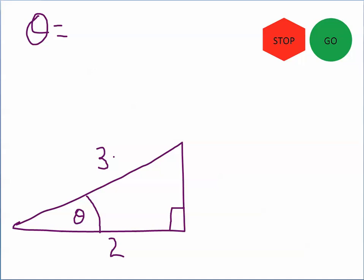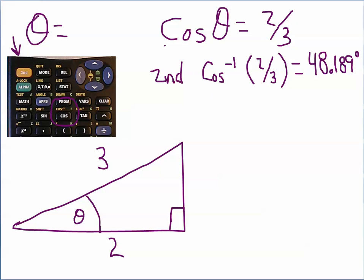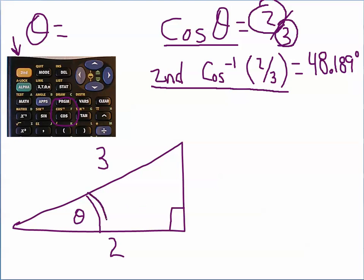All right, let's see if you can work this one — you're looking for theta. Press on the stop sign. All right, let's see how you did. We don't know theta, so we know we're going to be using the inverse function to work this problem backwards. We have the adjacent side and the hypotenuse, so that's the cosine. The cosine of theta equals the adjacent side divided by the hypotenuse. We use the second key for the inverse cosine. The inverse cosine of 2/3 is 48.189 degrees, correct to three decimal places. The drawing may look off, but pay attention to the numbers.